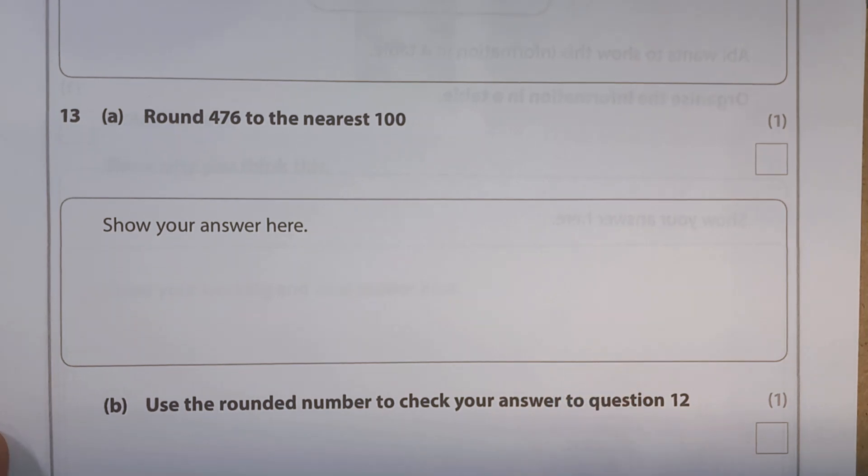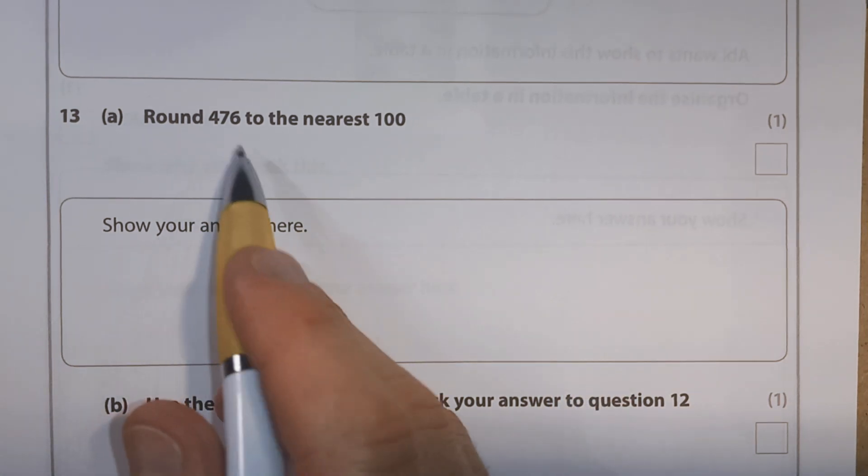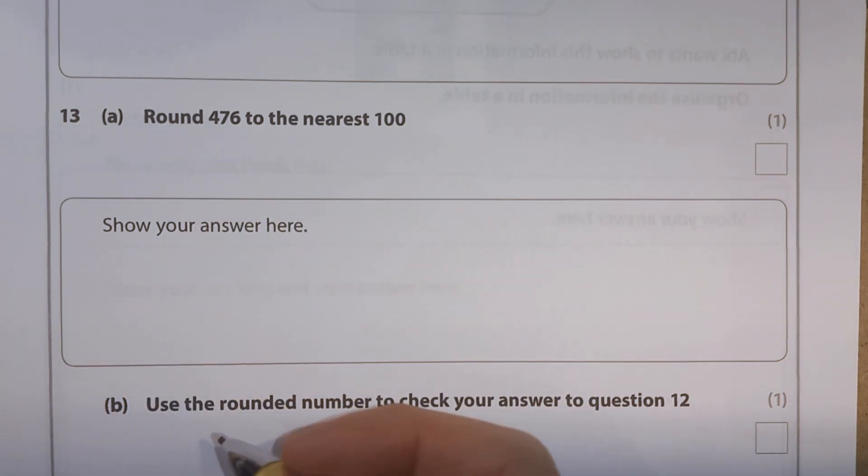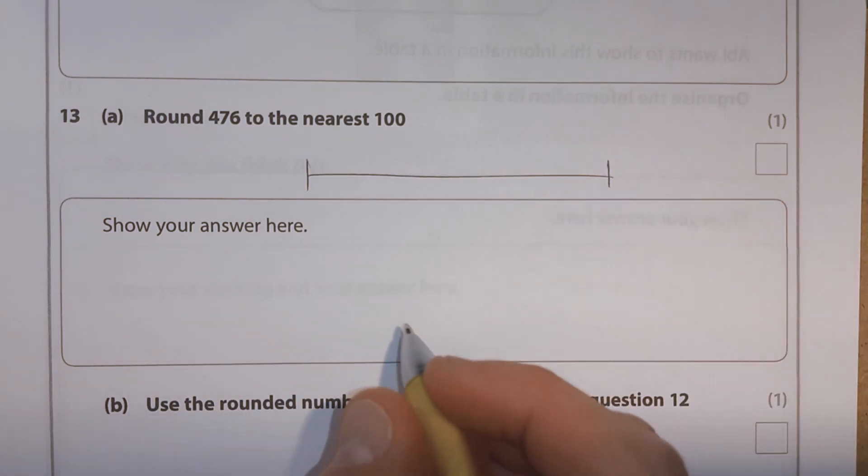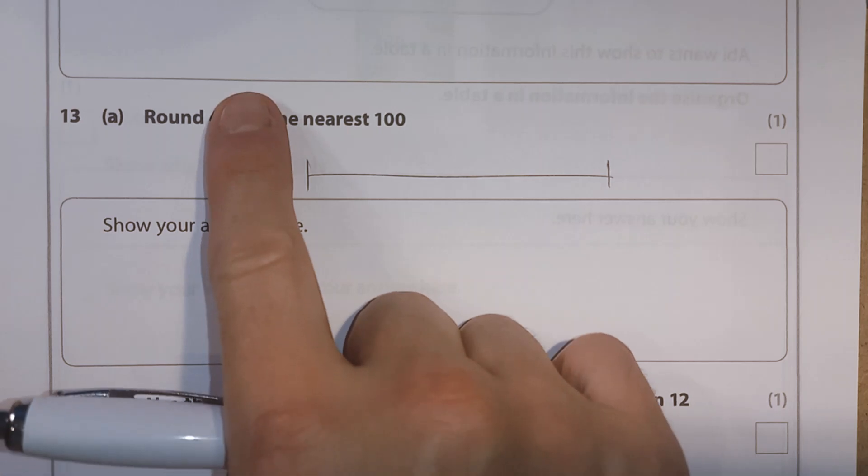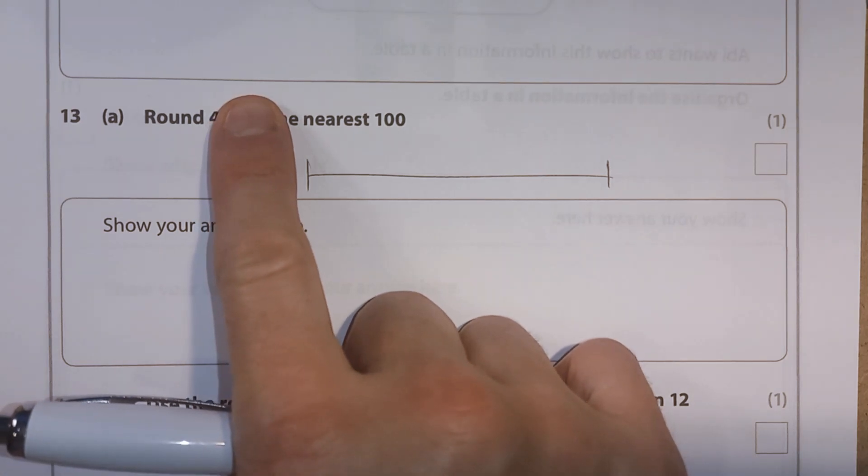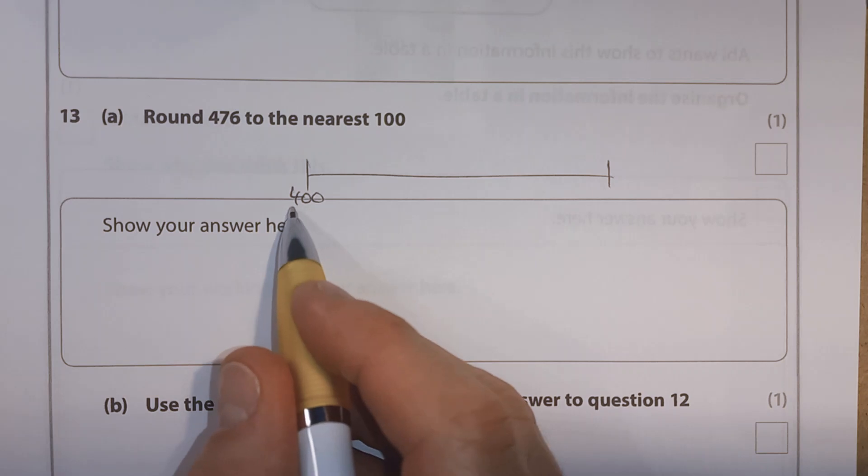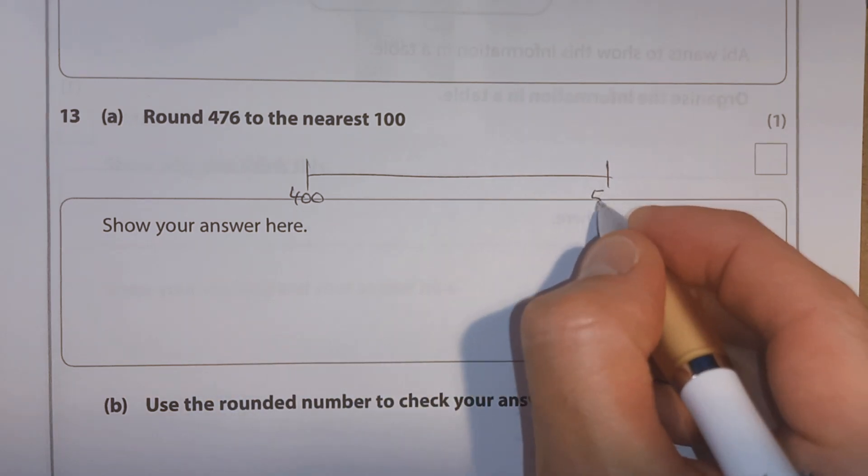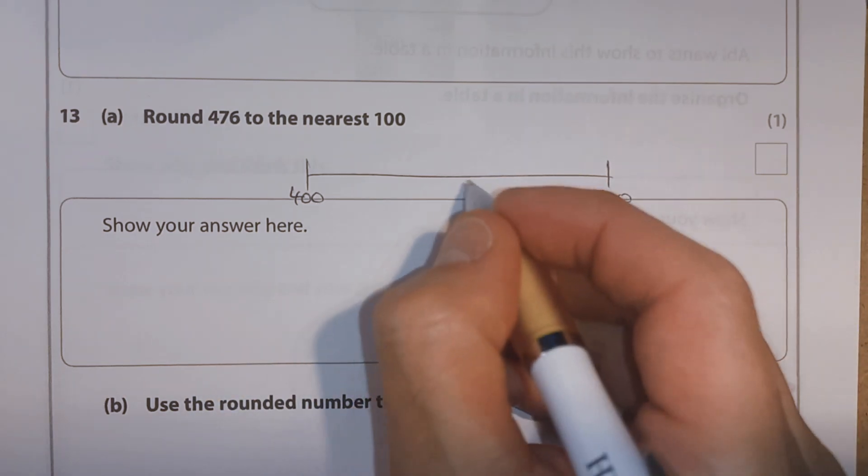Question 13, part A, round 476 to the nearest 100. So we can do similar to one of the earlier questions. Well, if we just look at the hundreds, the lower one would be 400. And the next 100 up from 400 would be 500.